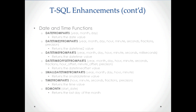There are several new date and time functions introduced in 2012, and the names give a pretty good indication of what they do. DATEFROMPARTS takes parts of the date — the year, month, and day — and returns the date value. Similarly, DATETIME2FROMPARTS returns the DateTime2 value, and so on. The last one, EOMONTH, is one that's particularly useful — it returns the last day of the month.